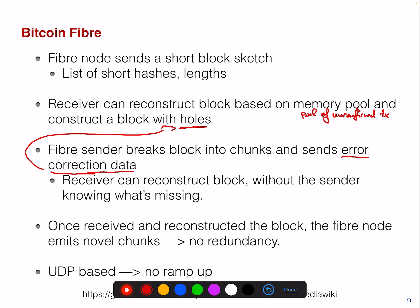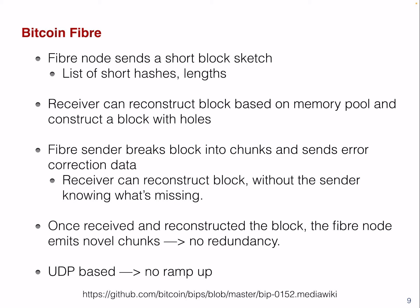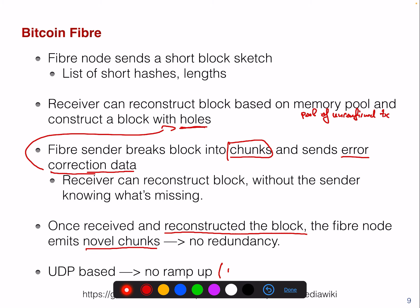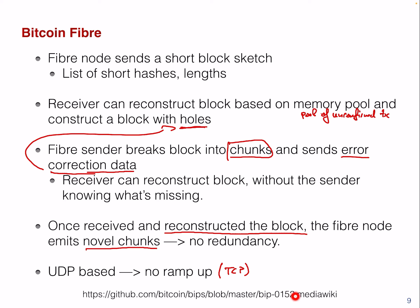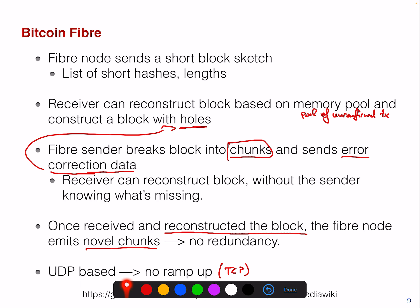Once you receive those chunks, you can reconstruct the block, and Fiber nodes can emit novel chunks — randomly created — so there's no redundancy. If a node receives different error correction data, they are all useful, minimizing useless data broadcast in the P2P network. The Fiber network is also UDP-based, meaning there's no TCP connection window ramp-up bottleneck. You can check out Bitcoin Improvement Proposal 152 if you want to know more details about the Fiber network.